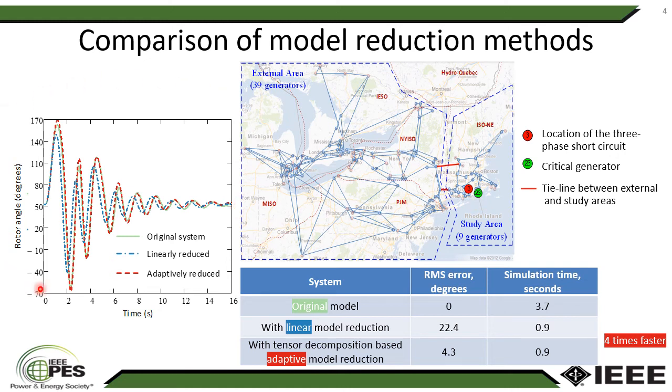And the rotor angle of this generator is represented in the figure where three trajectories are calculated using different models. And if we compare adaptively reduced model with the original system model, you can see the trajectories are very similar. So the adaptive reduced model can follow the trajectory of the original system.